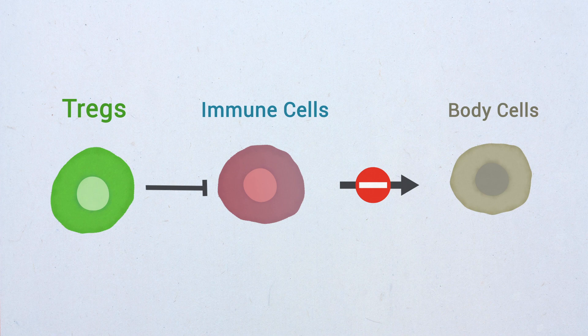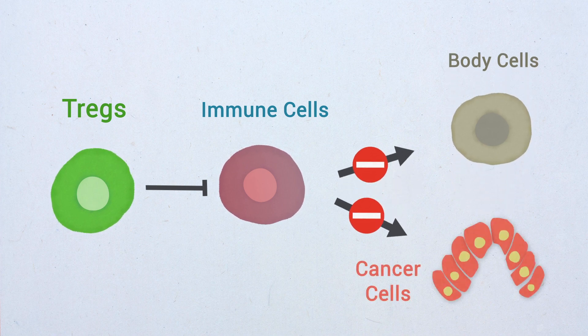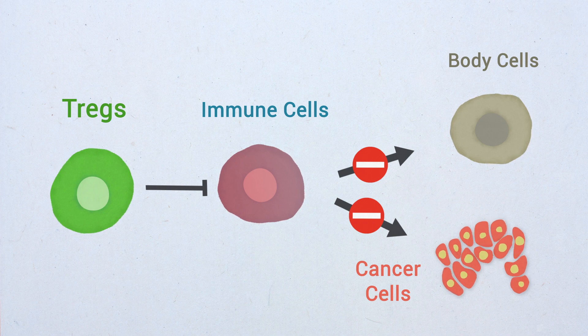Although immunosuppression by Tregs prevents autoimmunity, it also dampens anti-tumor immunity and favors cancer progression.